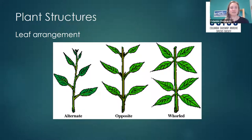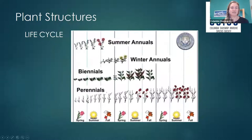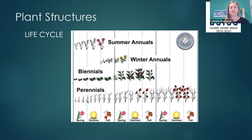The leaves are usually alternate to nearly opposite. As mentioned, these plants are biennials to perennials. Biennials take two years to complete their life cycle — they're a rosette in the first year and then flower in their second year. Perennials live longer than two years.